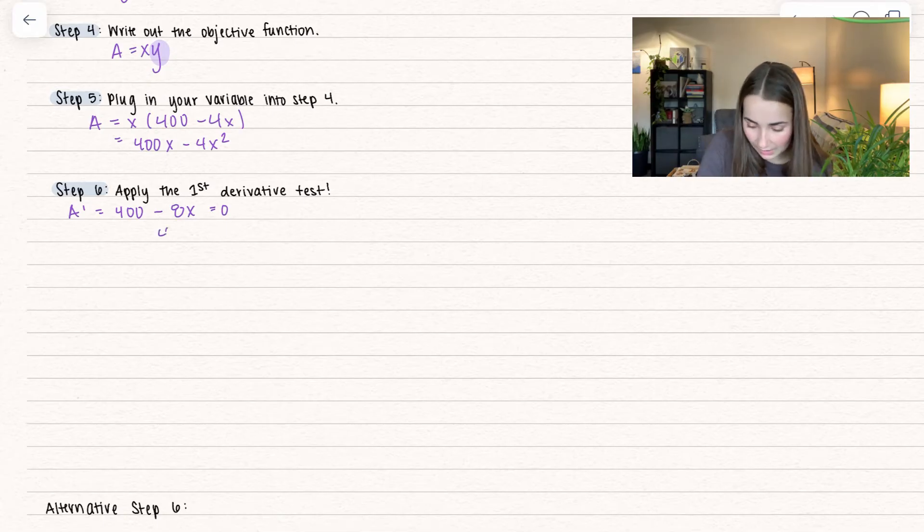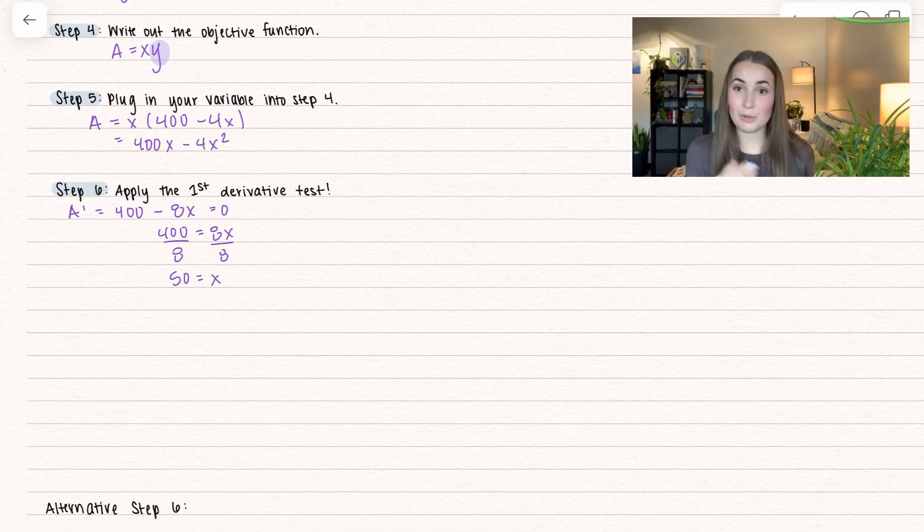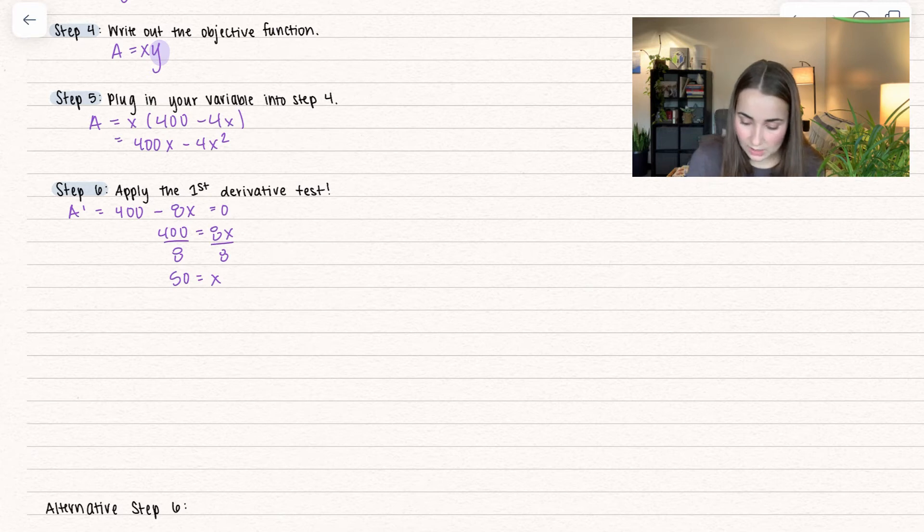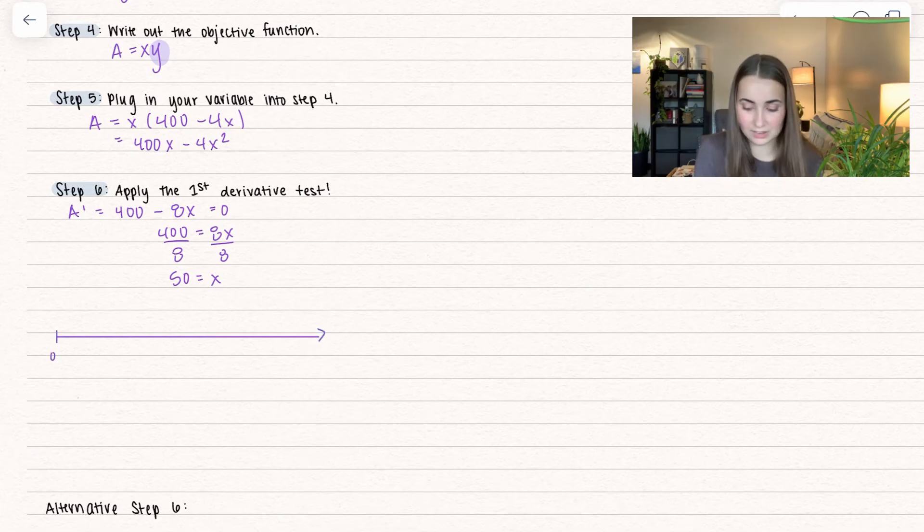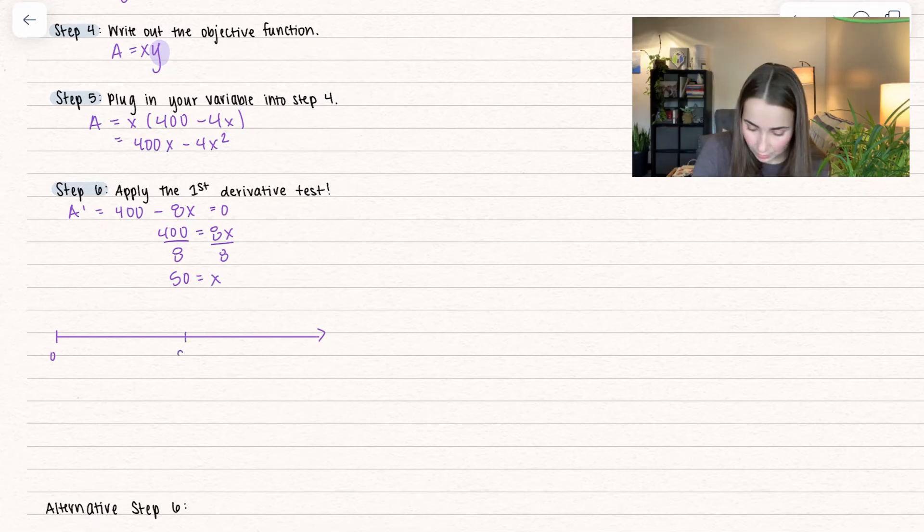I want to find the first derivative of the area. Taking that in terms of X, I get 400 minus 8X. Now let's set this equal to zero and solve for critical values. If I add over 8X, I get 400 equals 8X. Dividing both sides by 8, I get 50 equals X. So we have one critical point. Now let's draw out our number line.